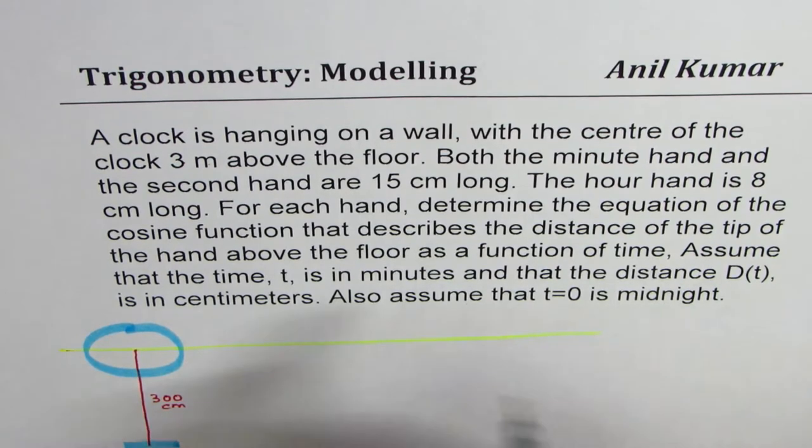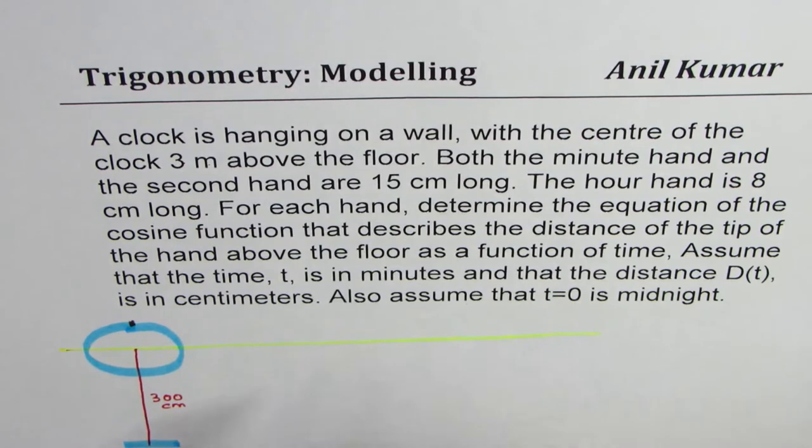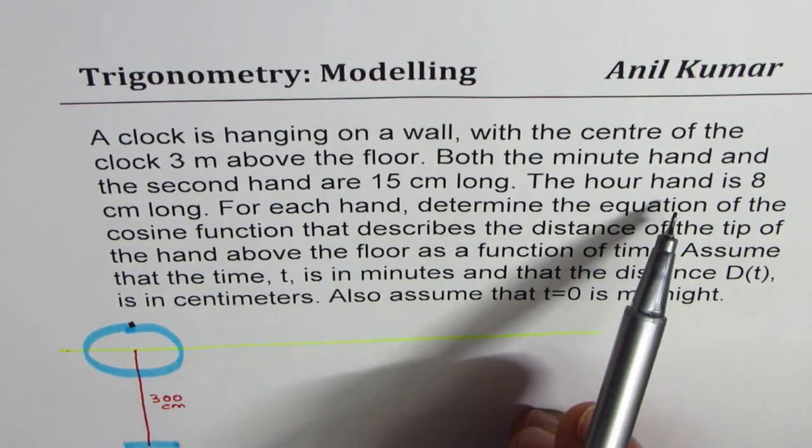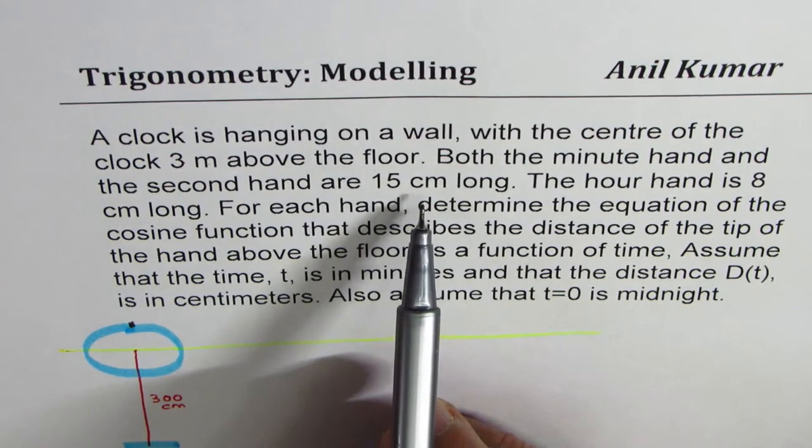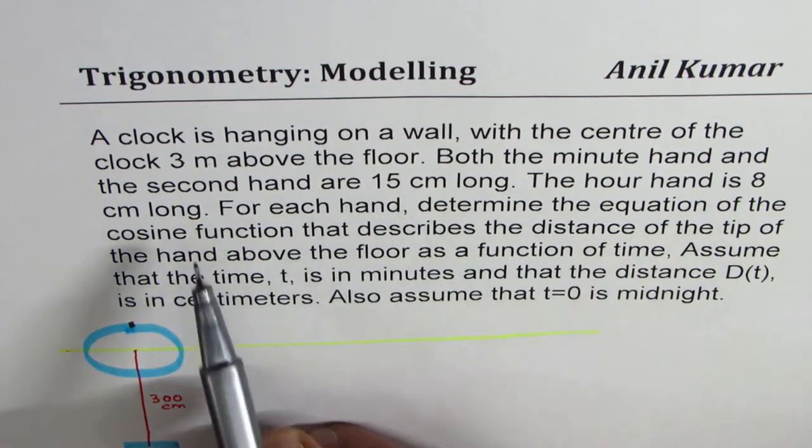We are assuming that time starts at 0 with 12. We are given the length of the hands as 15 centimeters for minutes, 15 centimeters for seconds and 8 centimeters for the hours.